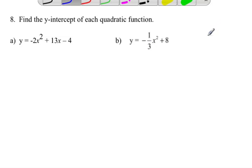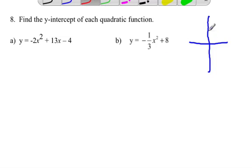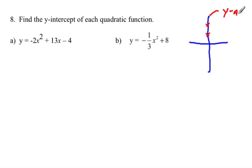Now anytime you're asked to find the y-intercept, the first thing you want to remember is if we're going to graph, the y-intercept is any point where the line crosses the y-axis. Remember, the y-axis is the vertical axis. So we want to know where is this parabola going to cross the y-axis, and any point along this y-axis has a common x-value, which means that x is always equal to 0.